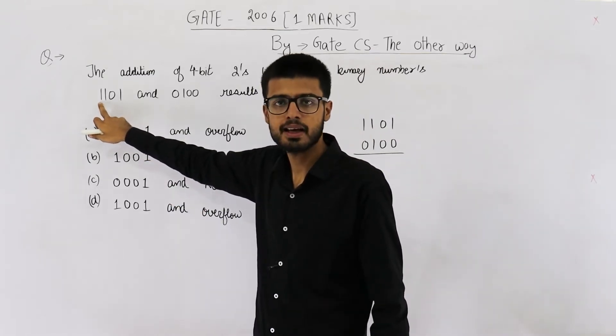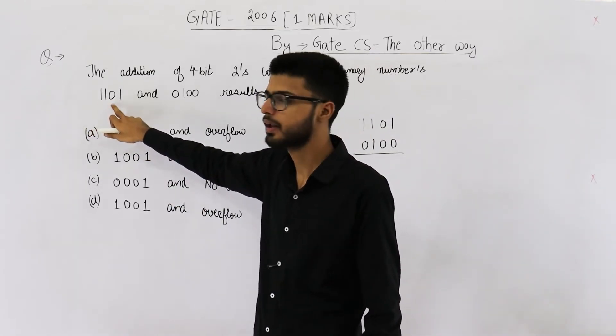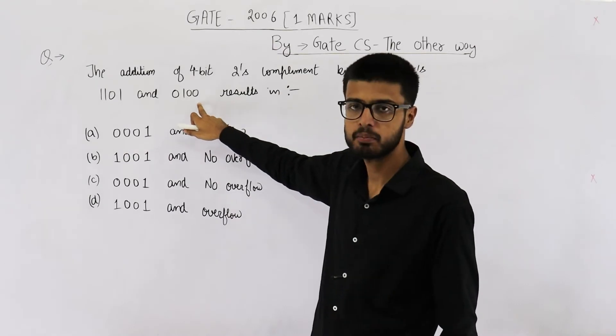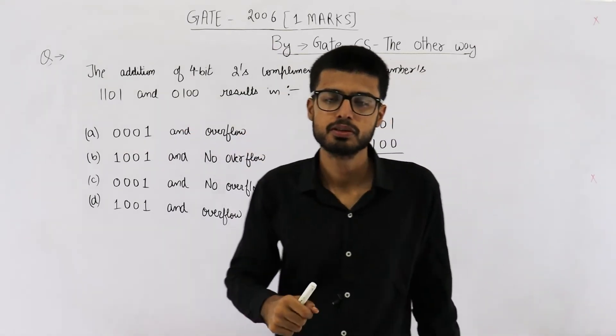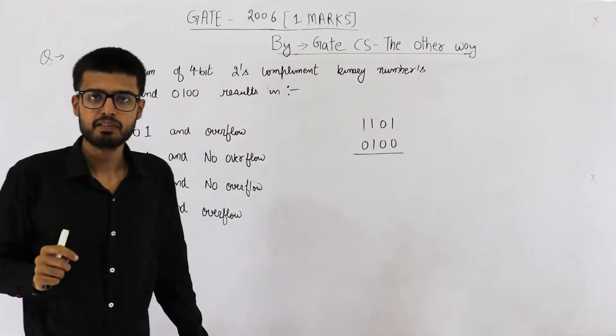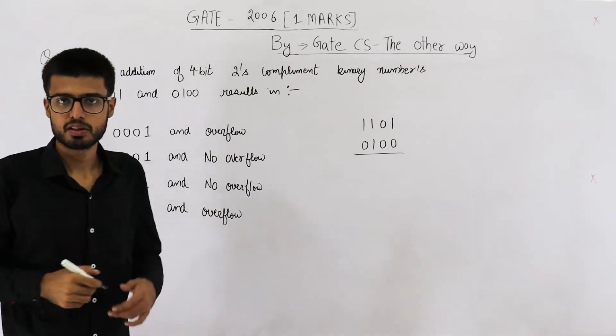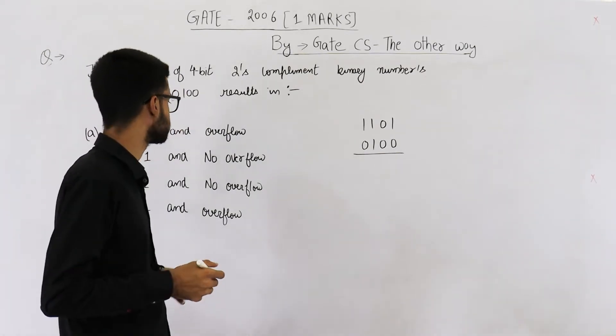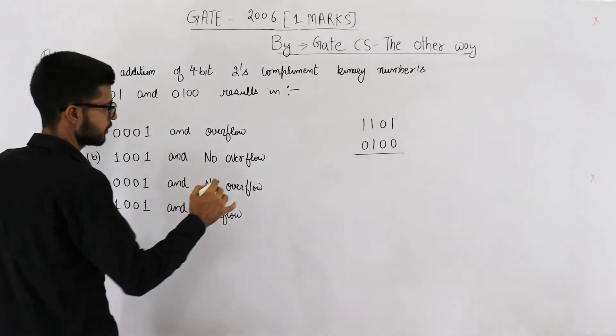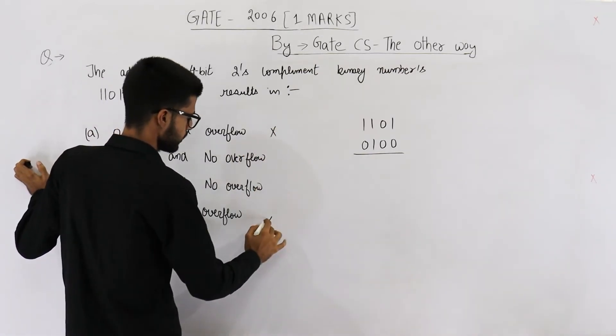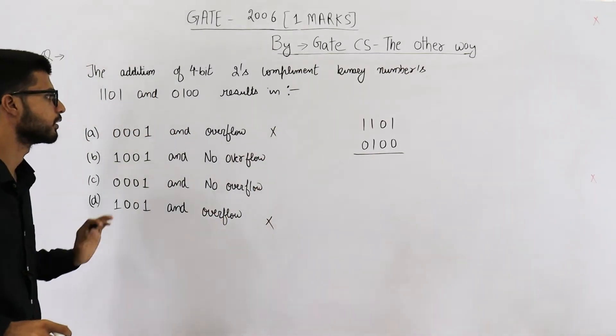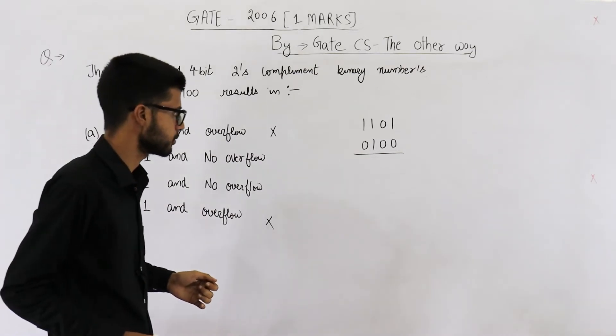This one has MSB equal to 1, that means it's a negative number. This one has MSB equal to 0, so this one is a positive number. And you know whenever we add one negative and one positive number it can never cause overflow. So this one and this one can be directly rejected. That means overflow is never possible.